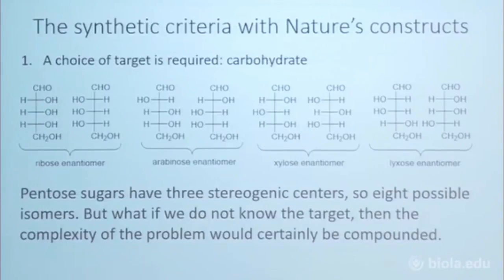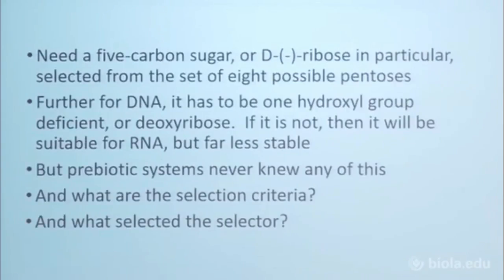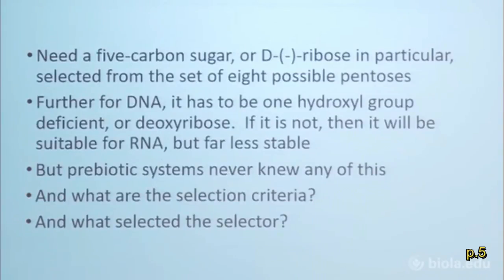So you don't just get one, you get all of them. What happens is you need these five-carbon sugars — you need D-ribose in particular. If it's for DNA, you have to pull off one of the hydroxyl groups to get deoxyribose. Unless you want to start with RNA, which is fine, and then you'd have ribose.